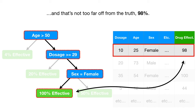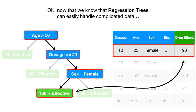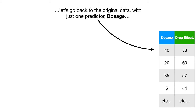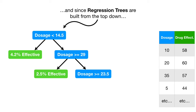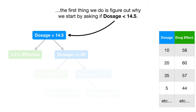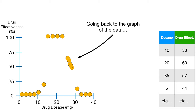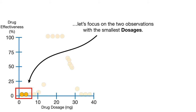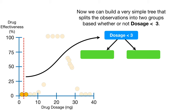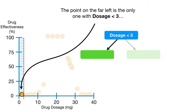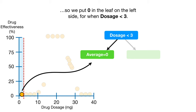Now that we know regression trees can handle complicated data, let's go back to the original data with just one predictor, dosage, and talk about how to build this regression tree from scratch. Since regression trees are built from the top down, the first thing we do is figure out why we start by asking if dosage is less than 14.5. Going back to the graph, let's focus on the two observations with the smallest dosages. Their average dosage is 3, and we can build a very simple tree that splits observations into two groups based on whether dosage is less than 3. The point on the far left is the only one with dosage less than 3, and the average drug effectiveness for that one point is 0. So we put 0 in the leaf on the left side.